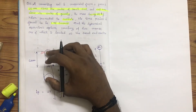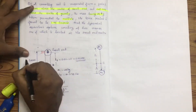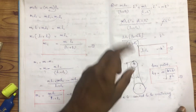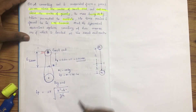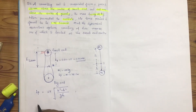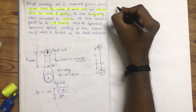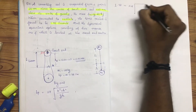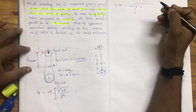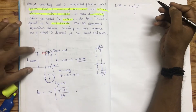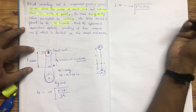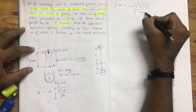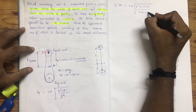If the connecting rod is assumed to be oscillating with respect to the fixed point, H is the distance from that point to the center of gravity. The time period is 1.78 seconds, equal to 2π times the root of k squared plus H squared, divided by g times H. H is equal to 0.62 metres.